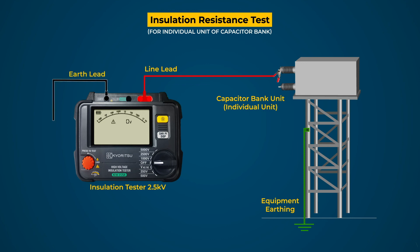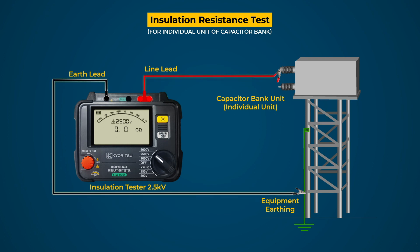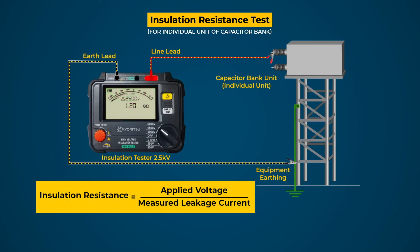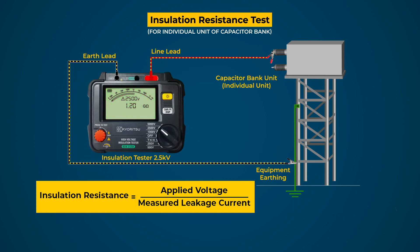For the insulation resistance test of an individual capacitor unit, connect the line terminal of the tester to the terminal of the capacitor unit and the earth terminal of the tester to equipment earthing through leads. Select the test voltage level to 2.5 kV. When the test button is pressed, a DC voltage is applied across the capacitor unit terminal and earthing terminals, causing leakage current to flow. The tester measures this leakage current and calculates the insulation resistance by the ratio of applied voltage to measured leakage current. Record the displayed IR value in megaohms and compare with earlier records or OEM recommendations; if found less, investigate and rectify the issue.